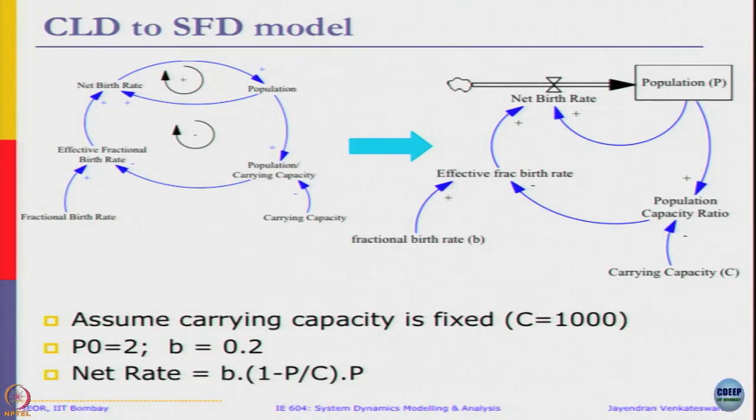This value here, b times 1 minus P by C, represents the effective fractional birth rate value. B is constant, so 1 minus P by C now represents the relation we're trying to capture where it was constant and then reduced. I'm just making it a simple straight line, 1 minus P by C, for modeling purposes. Let's see what happens when we do that.